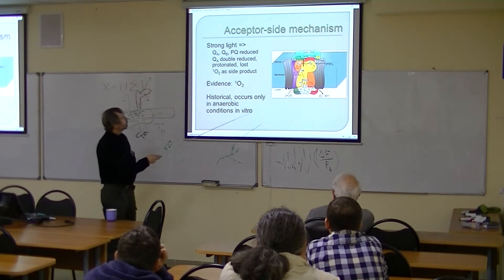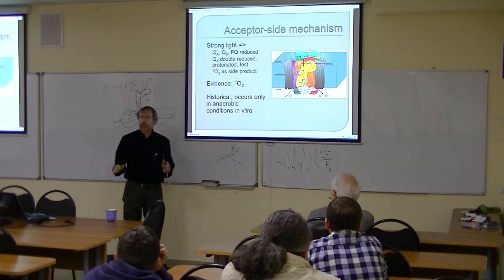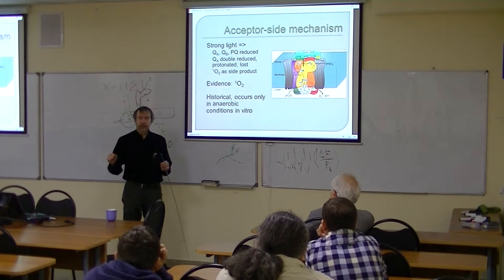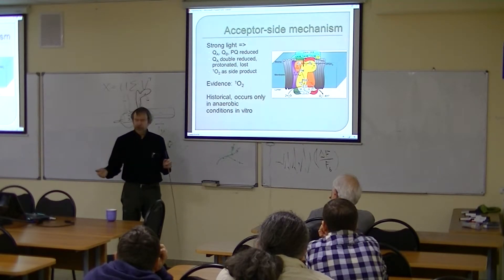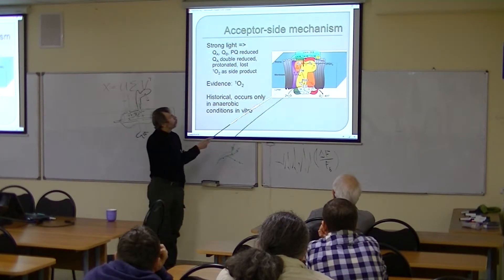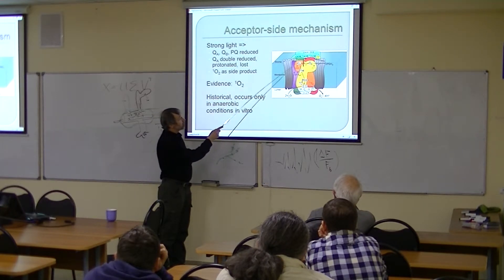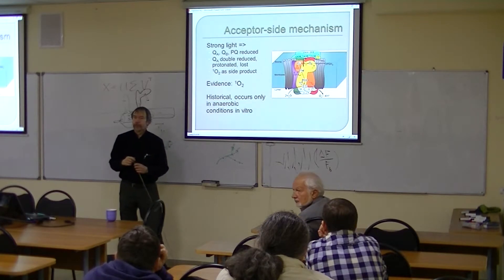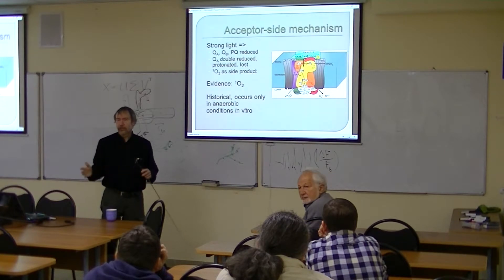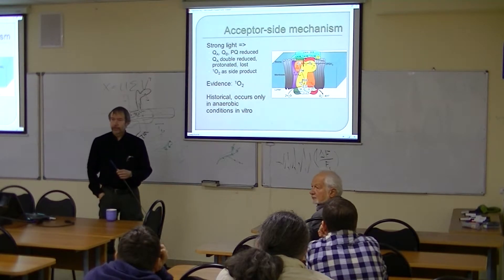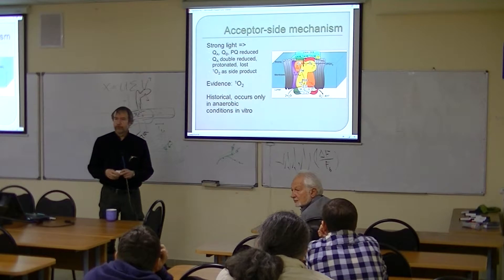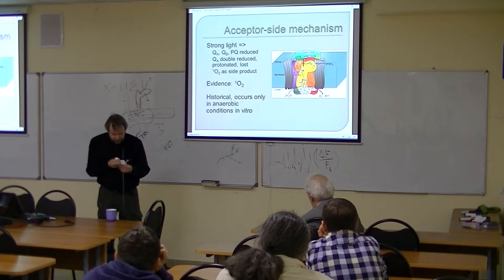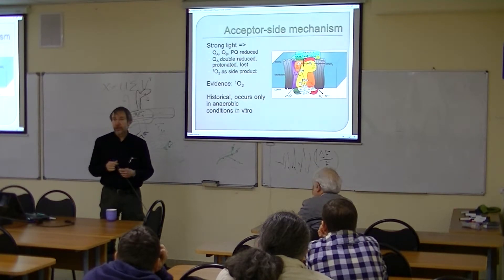The evidence for this mechanism is that when you put isolated thylakoids in something like 10,000 micro-Einsteins of light for some time, then release the anaerobic conditions, you get a huge amount of singlet oxygen produced. This is in agreement with the idea that proton activity does not limit the lifetime of the primary radical pair. Regarding the anaerobic conditions — it must be relatively strict, but with isolated thylakoids you can achieve this using a glucose-oxidase system. They did not use a glucose-oxidase system in those old experiments, so repeating them has turned out to be very difficult.